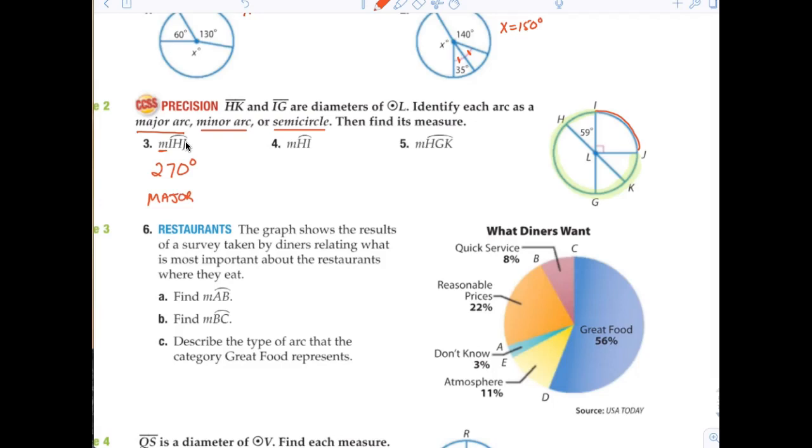Now, H, I would obviously be what? A minor arc. And number five, H, G, K. Semi-circle. That is correct.